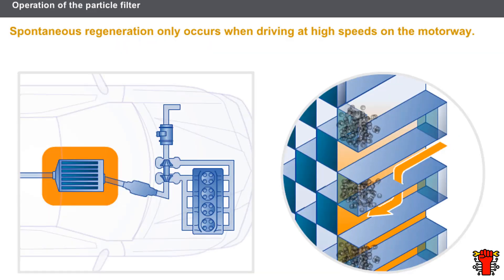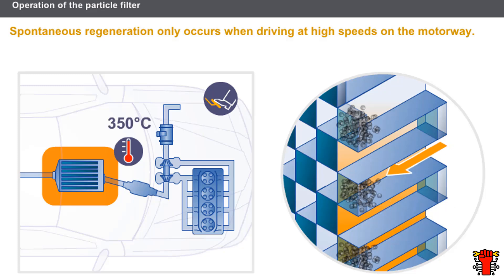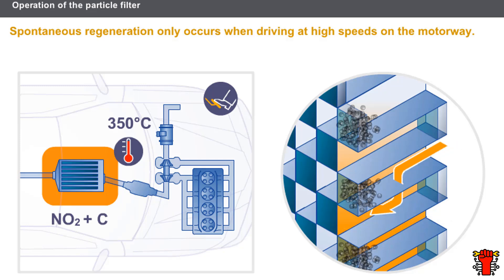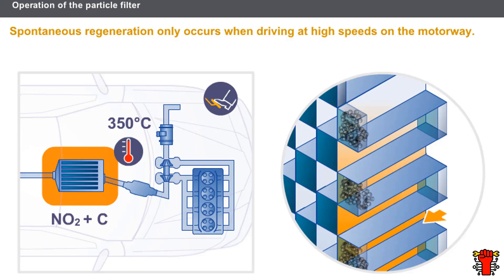When the engine is working hard, the particles are eliminated naturally — there is then a spontaneous regeneration. During high engine loads, the temperature of the exhaust gases increases. From temperatures of 350 degrees Celsius upwards, a catalytic reaction is produced between the nitrogen dioxide contained in the exhaust gases and the carbon in the particles. This reaction burns off the particles stored inside the filter. Spontaneous regeneration only occurs when driving at high speeds on the motorway.